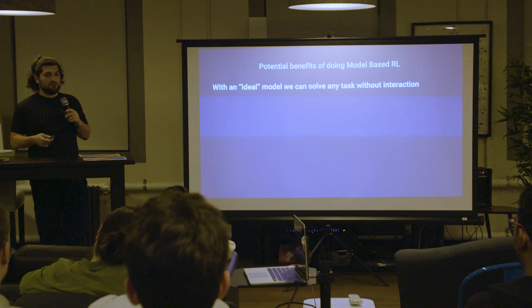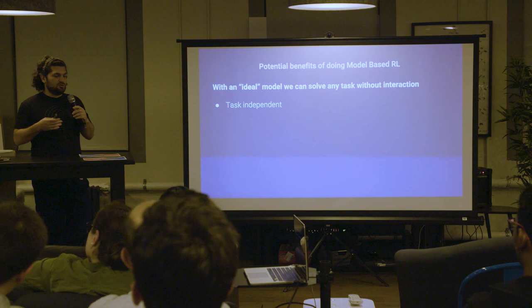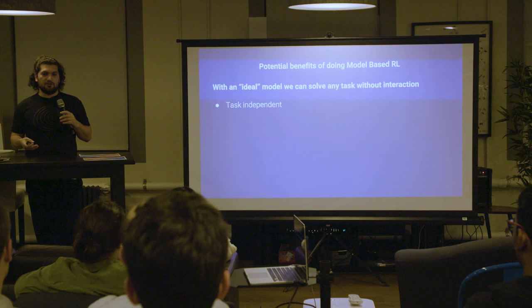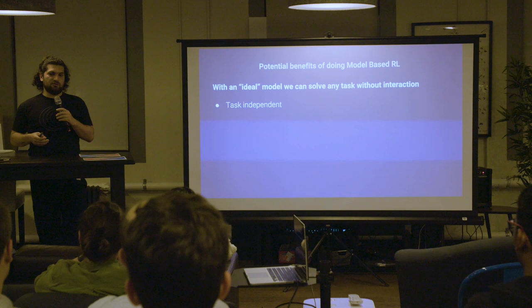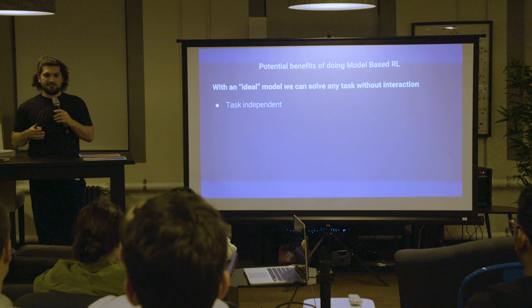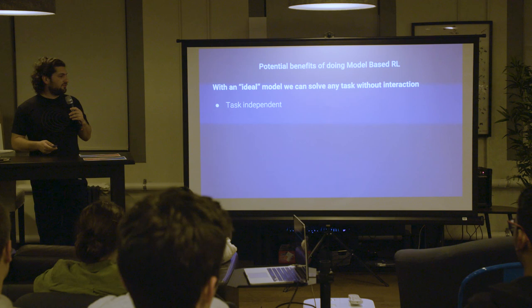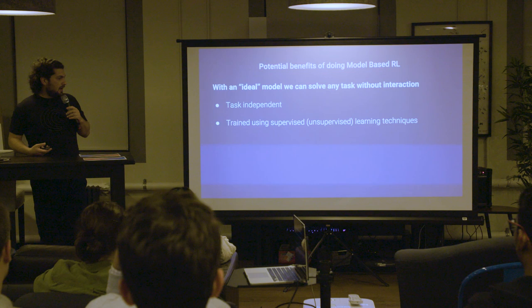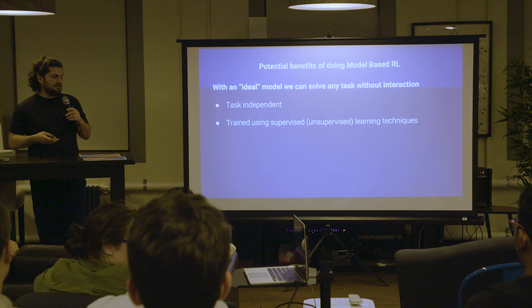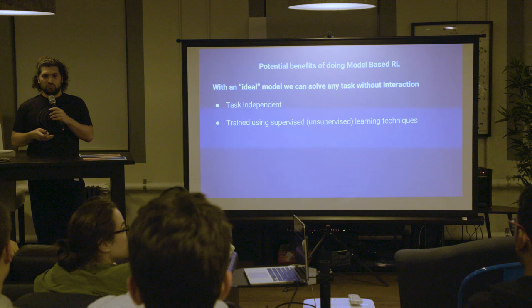In practice, however, we have to learn this model. One benefit is task independence: all of the policies and value functions that a model-free algorithm estimates are based on specific rewards. If you slightly change your task, you usually have to retrain from scratch. If you have a model accurately learned on one task and you change the reward, you can retrain on top of it without interacting with the environment. Models usually train in a supervised way, which is much more stable as it doesn't rely on bootstrapping.